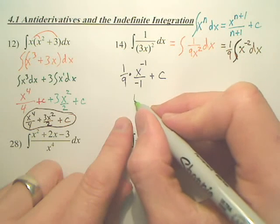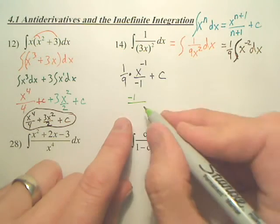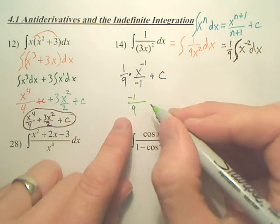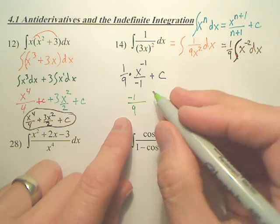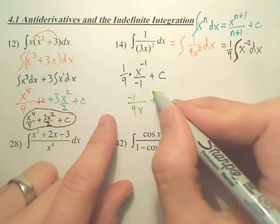So my answer looks like it's going to be 1, or can I put negative 1? Bring the negative just up. And this is going to be a 9, and where's the x going to be? On the bottom, because of the power, plus c.